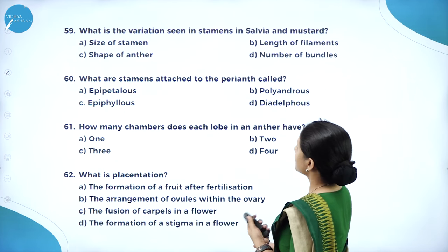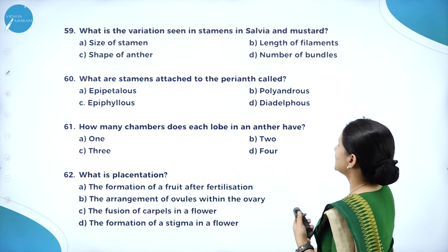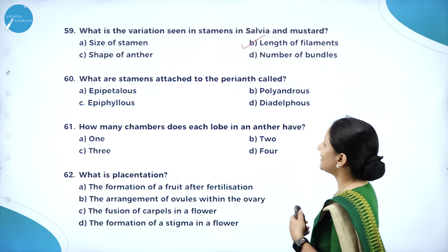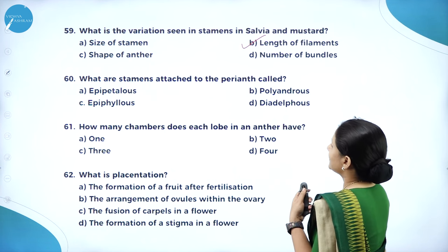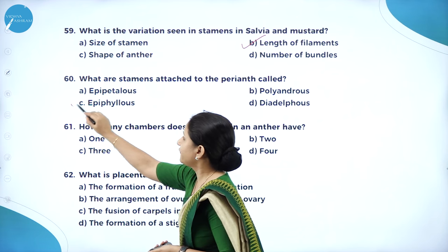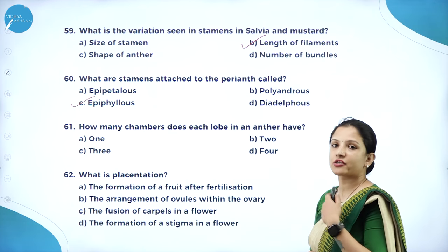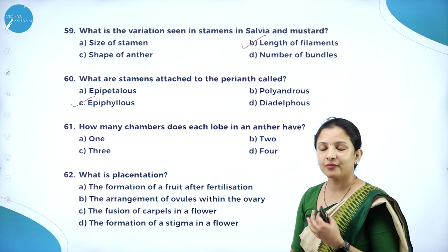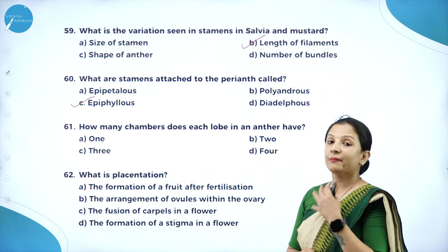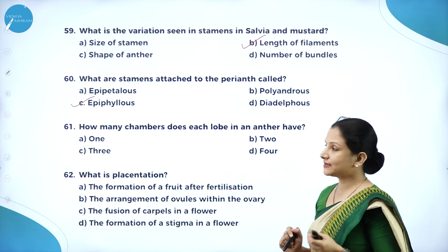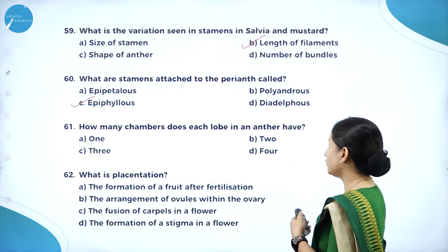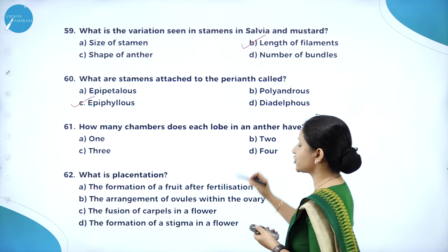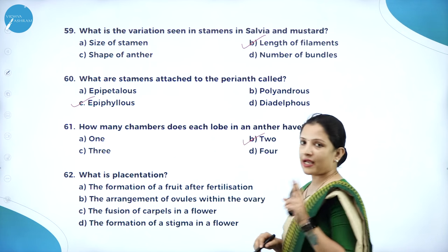What is the variation seen in stamens in salvia and mustard? It is the length of filaments — option B. What are stamens attached to the perianth called? They are called epiphyllous. Epipetalous means attached to petals; epiphyllous means attached to the perianth — where you cannot distinguish between a petal and a sepal, both looking the same. How many chambers does each lobe in an anther have? Each lobe has 2 chambers, so totally an anther has 4 chambers.